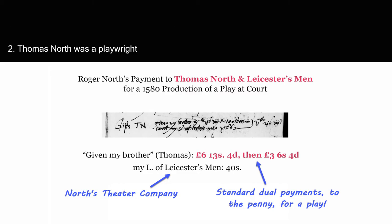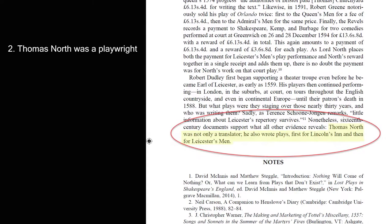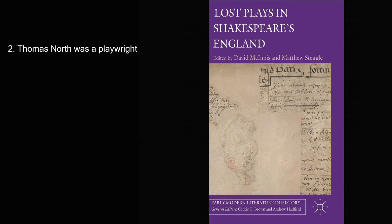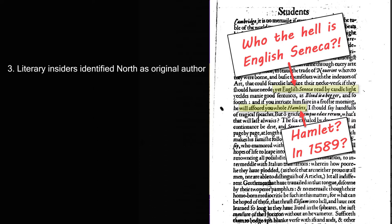The second section will reveal newfound receipts and documents confirming Thomas North was a playwright. He was a Master of Revels at his university law school, Lincoln's Inn, and wrote plays for decades for the Earl of Leicester's Theatre Company. We will also learn why, as with the majority of plays in Elizabethan England, none of Leicester's men's plays were ever published, and all are now lost.